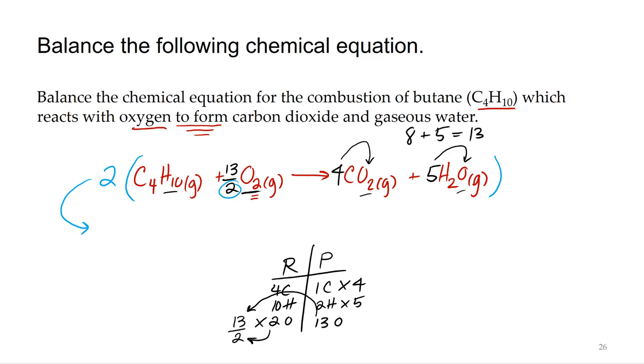I'm going to multiply by two, so that's going to give me two butanes plus 2 times 13 halves, that's 13 oxygens, and that produces 2 times 4 is 8 carbon dioxides and 2 times 5 is 10.